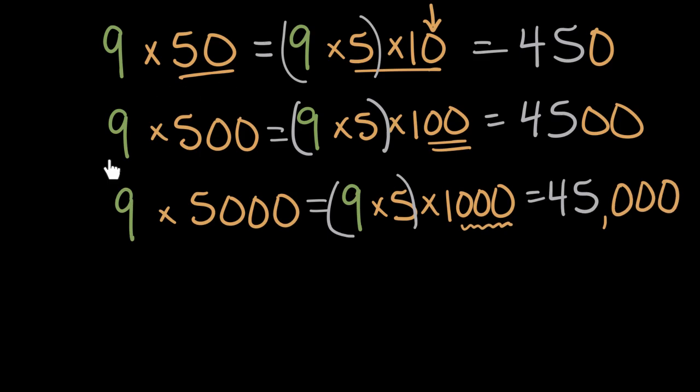So when we multiply each of these expressions, we can see the only thing that changed was the number of zeros on the end. So the pattern, any time we multiply a whole number times 10, we add one zero to the end of our number. Any time we multiply a whole number times 100, we'll have two zeros. And times 1,000, we'll have three zeros.